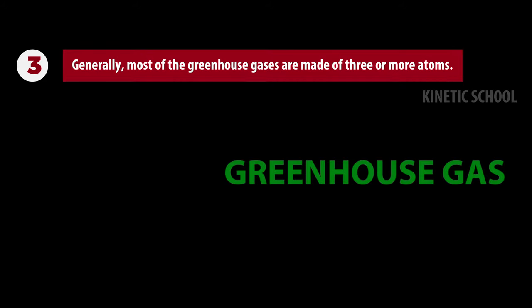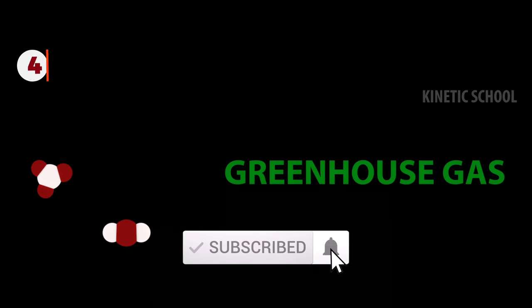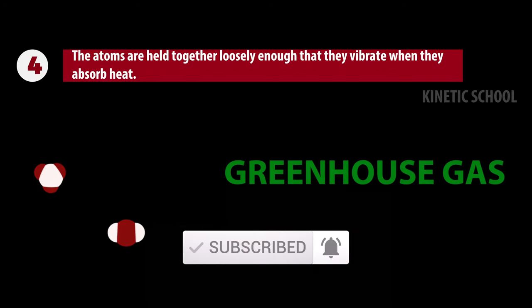Generally, most of the greenhouse gases are made of three or more atoms. The atoms are held together loosely enough that they vibrate when they absorb heat.